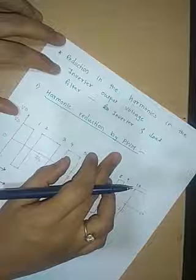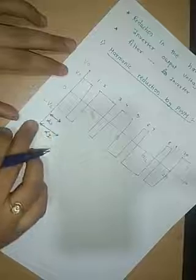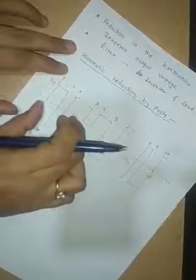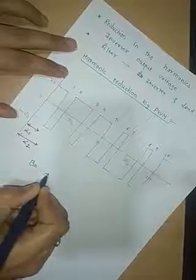In pulse width modulation, several pulses per half cycle are used. As the number of pulses per half cycle increases, the low order harmonics get eliminated. The figure shows the output waveform of a single phase full bridge inverter. This total duration is denoted as alpha 1 and the duration from 1 to 2 is denoted by alpha 2. As this wave has quarter wave symmetry, the BN component of output voltage is equivalent to 0.